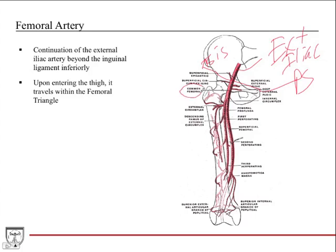Sometimes you'll hear it called the common femoral because it splits into the profunda femoris artery — similar to the profunda brachii in the arm — and then becomes the superficial femoral, which continues distally. Really important to know is that upon entering the thigh, the femoral artery travels within the femoral triangle.